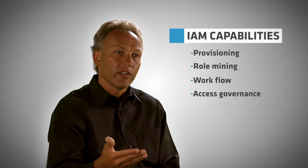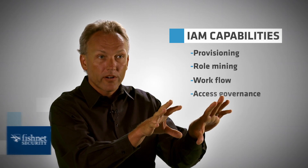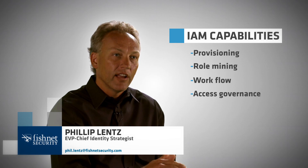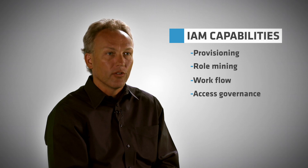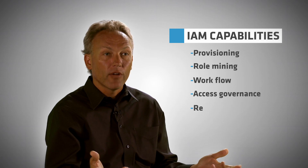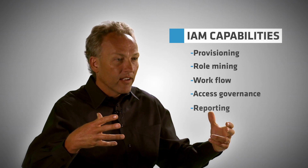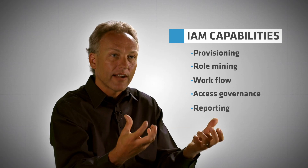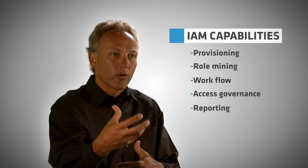The fourth area is access governance — access review processes. Managers log in once a quarter for Sarbanes-Oxley compliance, for example, and review what access rights people have, certifying or decertifying whether they should have access to those systems. And lastly, number five, we have reporting, which is focused on a data warehouse of all users, all entitlements, and the history of what transpired to grant those entitlements and whether it fits into certain regulatory controls.